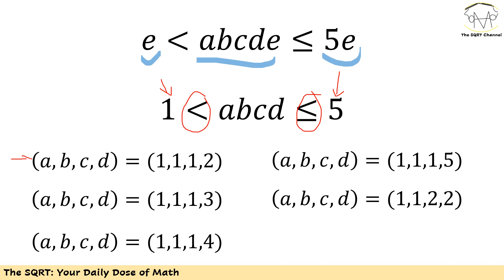Let's start with a=1, b=1, c=1, d=2. This is valid since 1·1·1·2 = 2, which is greater than 1 and less than or equal to 5. Note we won't consider different orderings since we assumed a ≤ b ≤ c ≤ d, so d holds the maximum value among these four.